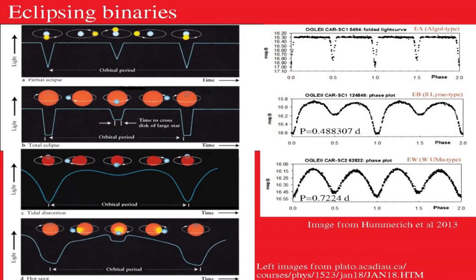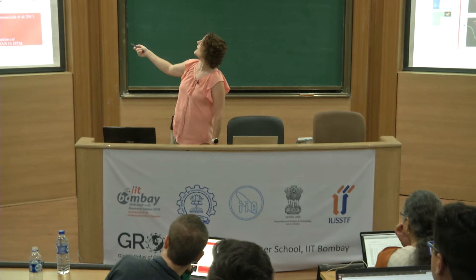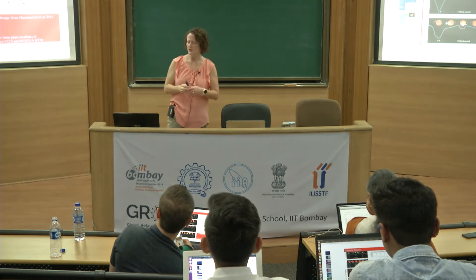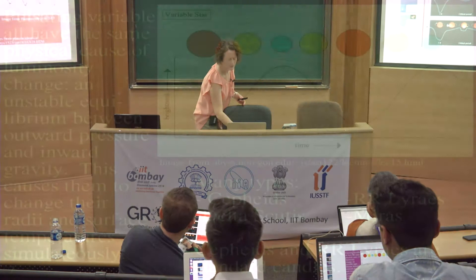Let's step through the slides. First, eclipsing binaries — you guys are probably familiar with those. We have a baseline magnitude and then eclipses of various shapes depending on the different kinds of systems. The magnitude changes are maybe a half to one magnitude — a distinct change, but not as big as some of the others. I'm not going to spend too much time on eclipsing binaries because this is a more obvious source of variability.